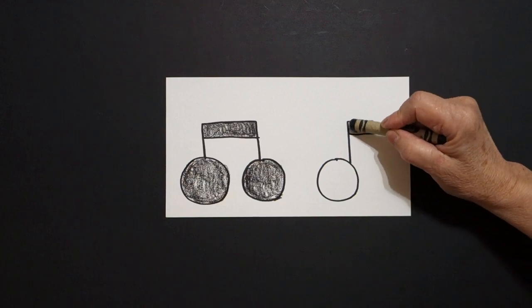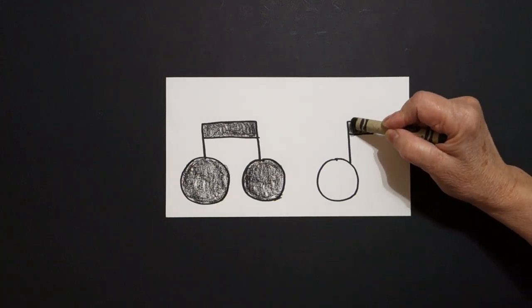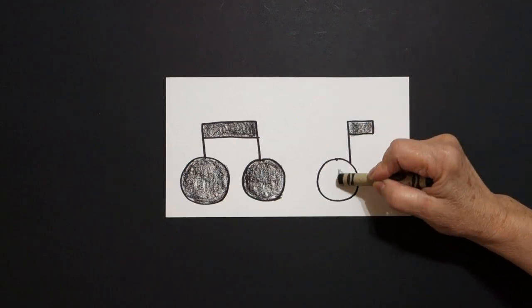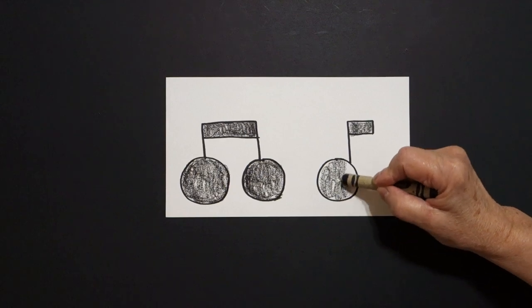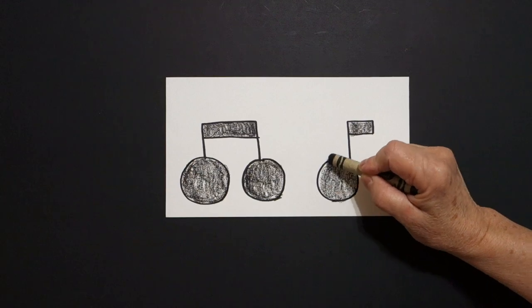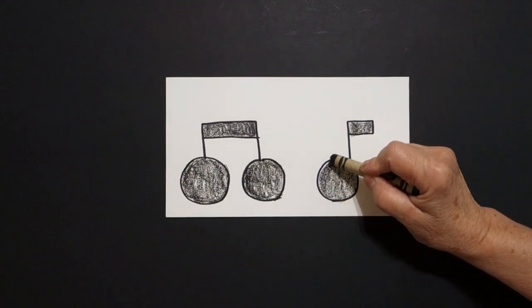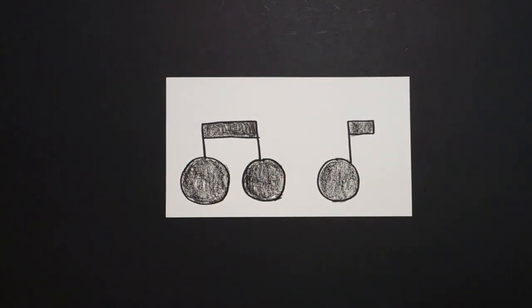And this is one music note. Now jump over and let's color this music note. And each one of these notes represents a time. Okay. And the combination of the music notes is what makes the music. All right, let's see what this looks like all colored in.